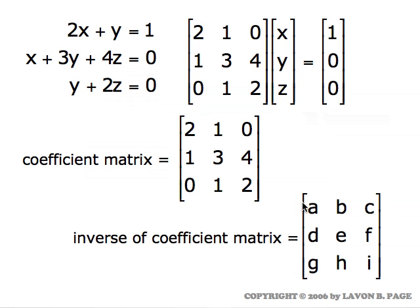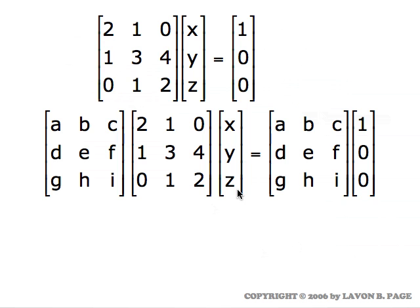In this matrix equation we're looking at the coefficient matrix for the system. Let's temporarily use the letters a, b, c, d, e, f, g, h, i to represent the entries in the inverse matrix for that coefficient matrix. So here's the coefficient matrix for the system, and let's use these letters to represent the numbers that would be in its inverse matrix. Let's think about what happens when we multiply by that inverse matrix in this matrix equation.